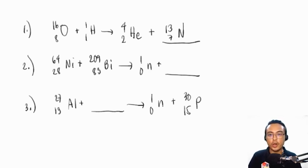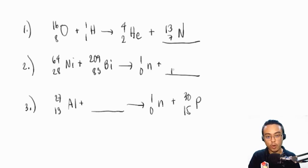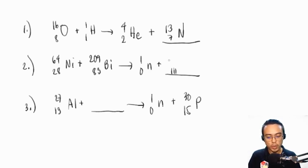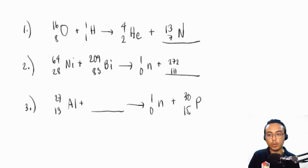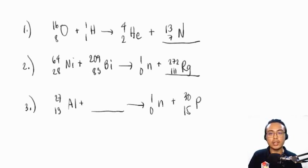Example two: nickel-64 plus bismuth-209 yields a neutron plus a blank. Balancing atomic numbers: 28 plus 83 equals 111; neutron contributes 0, so the unknown has atomic number 111. Balancing mass numbers: 64 plus 209 equals 273; neutron contributes 1, so the unknown has mass number 272. Element 111 is roentgenium, so the product is roentgenium-272.